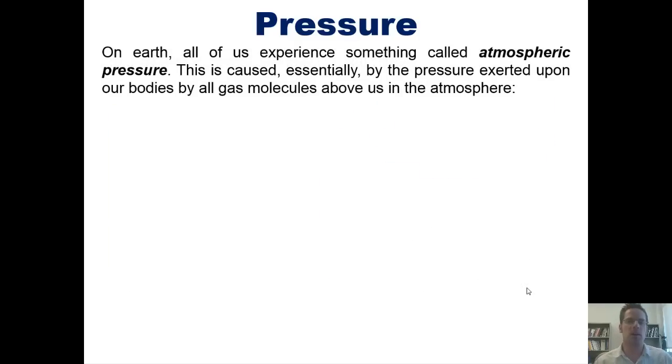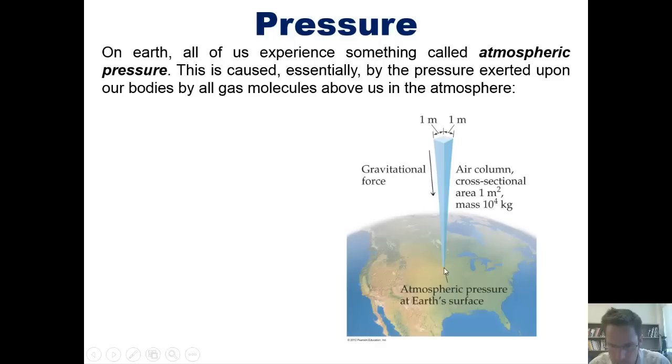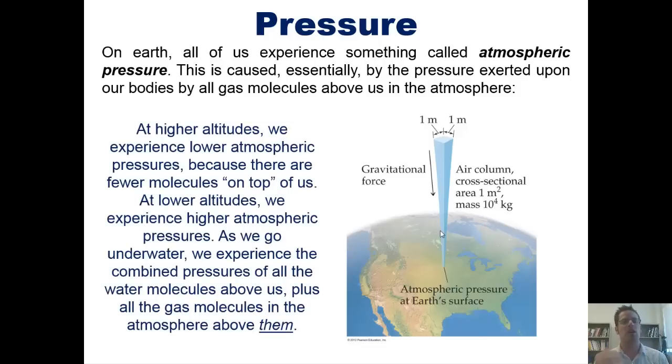On Earth, all of us experience something called atmospheric pressure. This is caused essentially by the pressure exerted down upon our bodies by all of the gas molecules above us in the atmosphere, as shown in this figure. You can imagine yourself, for example, standing right there in what looks like northern United States or Midwest United States, and having all of the gas particles in the entire atmosphere, all the way up to the stratosphere, being pushed down or piled down on top of you. The amount of pressure or force or weight that you feel exerted upon your body by all of those gas molecules above you is called atmospheric pressure. It stands to reason, then, that at higher altitudes, you experience lower atmospheric pressure, because if you're up on top of a mountain, there are fewer molecules of gas between you and the upper atmosphere.